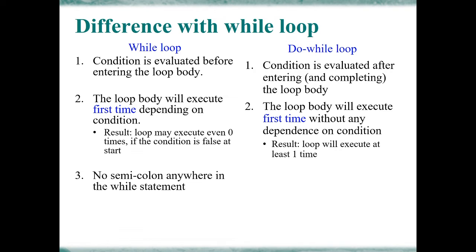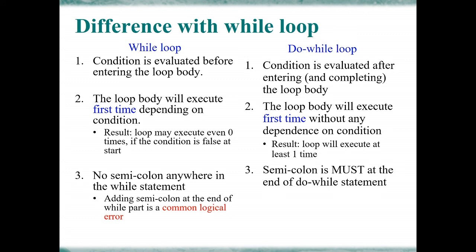Another difference is that in a while loop, there is no semicolon used in the while statement. Adding a semicolon at the end of the while part is a common logical error — if you use a semicolon at the end of the while loop statement, you will get a logical error, so you must not use a semicolon in a while loop. In a do while loop, a semicolon is required at the end of the do while statement. If you do not use a semicolon, you will get a compile-time error.